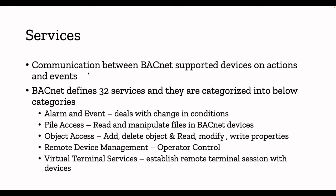The second implementation area is services, used for communication between BACnet-supported devices on actions and events. BACnet defines 32 services categorized into five categories. First is alarm and event — if something happens, say temperature goes beyond a certain threshold, it will trigger a BACnet object or device to perform some actions. That's what comes under the alarm and event category, which deals with changes in conditions. Second is file access — read and manipulate files stored in BACnet devices.